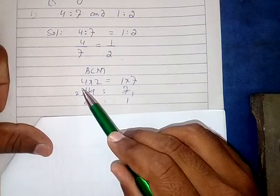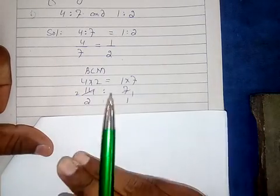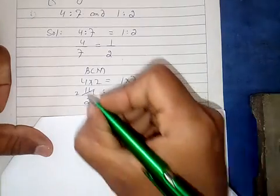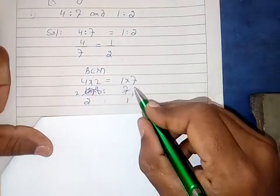So this will be written as 4 times 2 is 8, and then this will be written as 1 times 7.